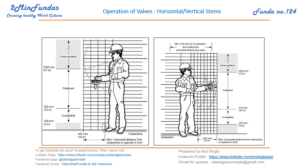Now, sufficient space should be available for the operator to stand. The valve is within the preferred range, so a person can stand and operate the valve — this much space should be maintained. Here, 610mm is the total minimum space where the operator can stand and operate the valve, from the valve to the operator's end.